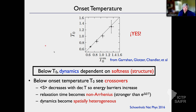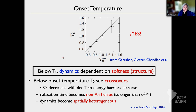All right. So now what I want to show is: what if we take that energy and entropy barriers given for a given softness, and now what we want to do is try to develop a theory that captures these things — the decreasing softness with decreasing temperature, the non-Arrhenius relaxation time, and spatially heterogeneous dynamics. So how do we get that?